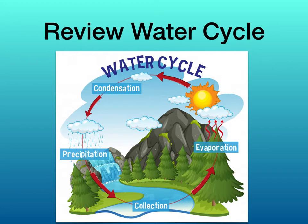Here is where the water condenses into the clouds. The teeny tiny water droplets inside of the clouds start to merge together, creating larger drops of water. Once the water drops become too large and too heavy, it falls back down to earth in the form of precipitation. Precipitation could be rain, sleet, hail, or snow.